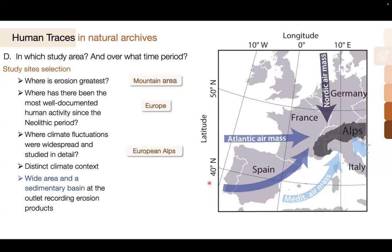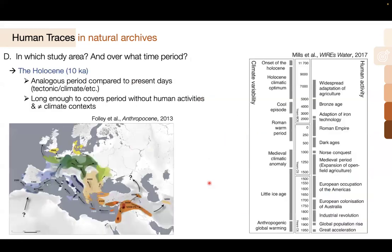In terms of time period, the Holocene is great because it's analogous compared to present days, at least in terms of geodynamic and climate. We can almost consider the effect of tectonic erosion as constant. We have different climate contexts throughout this time period, and the good thing about the Holocene is that in Europe, the period is long enough to cover a time without any human activities impacting erosion.